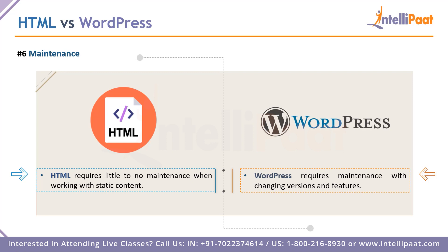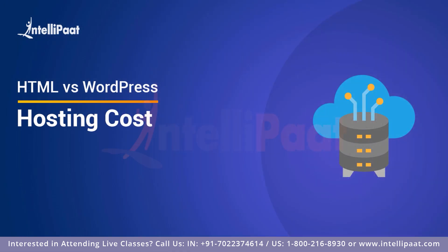Point number six is maintenance. HTML requires little to no maintenance if your website is built on static content — you just host it and work on it. With WordPress, every couple of months there are new features and versions, and every major version change requires time to understand what's new and how to leverage it, which also costs money if you've hired someone. In terms of maintainability, HTML wins this round.